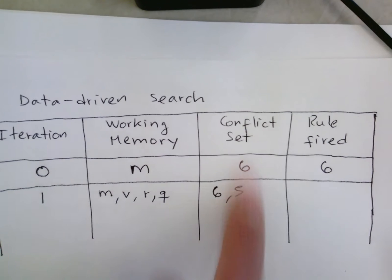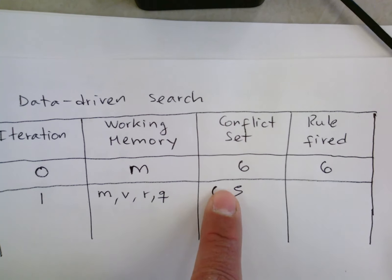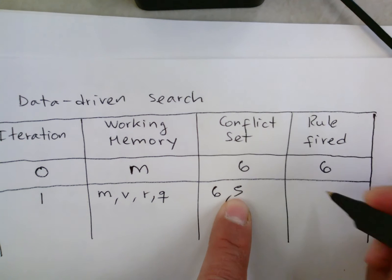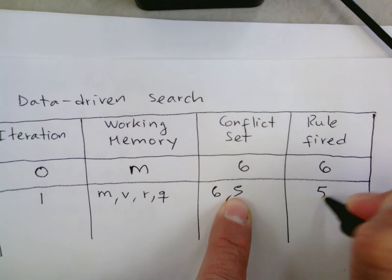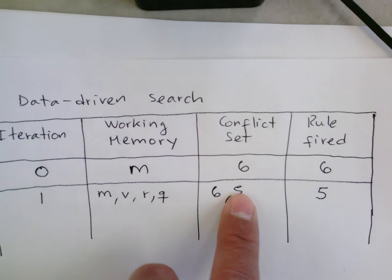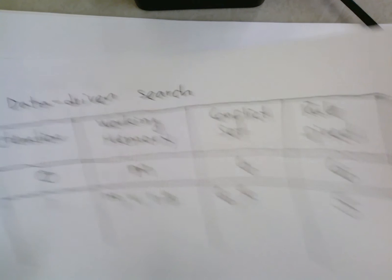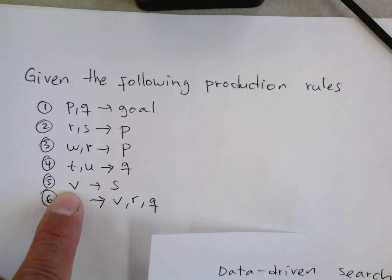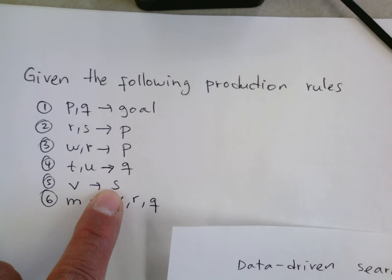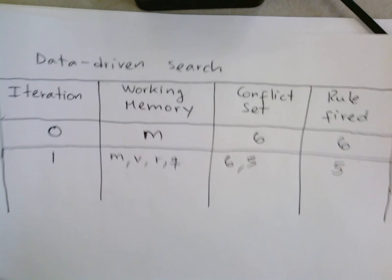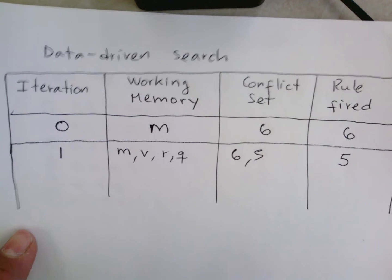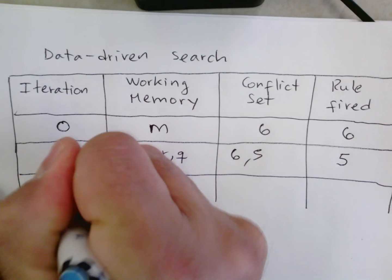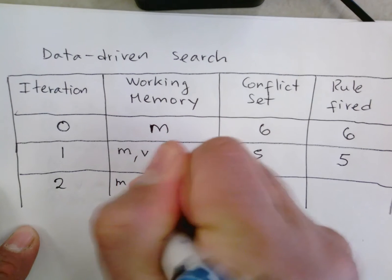This is what we have in the conflict set. We now execute rule five, which was the last match. For rule five, from V we are adding S into working memory. On the next iteration we have M, V, R, Q, and now S.